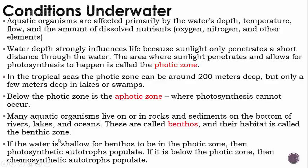Photosynthetic autotrophs use the sun's light — photosynthesis. Chemosynthetic autotrophs use chemicals to make their own food, such as sulfur coming out of volcanic vents.